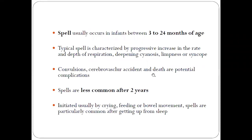Cyanotic spells are usually seen in patients of Tetralogy of Fallot, where the symptoms will usually manifest between 3 to 24 months of age. After 3 months, the pulmonary stenosis starts getting more and more aggravating, which leads to more blood going from the right ventricle to the left ventricle, causing a mixture of blood and leading to cyanosis.